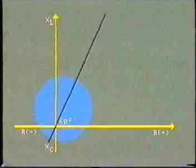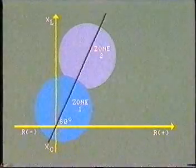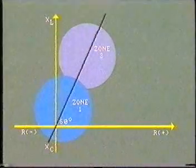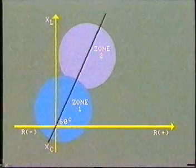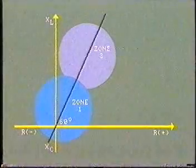For second zone protection, the second element can be offset like this. Again, because of the relatively narrow band, it is well outside of the load impedance.